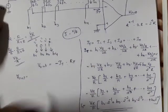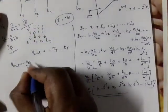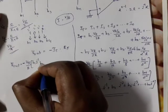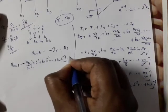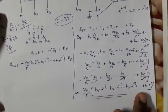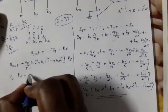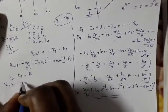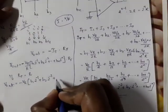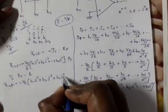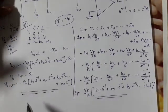Therefore, Vout equals IT × Rf = (VR/R) × (B1×2^(−1) + B2×2^(−2) + ... + Bn×2^(−n)) × Rf. If Rf equals R, then Vout equals minus VR × (B1×2^(−1) + B2×2^(−2) + B3×2^(−3) + ... + Bn×2^(−n)). This is the Vout equation for the R2R ladder type DAC.